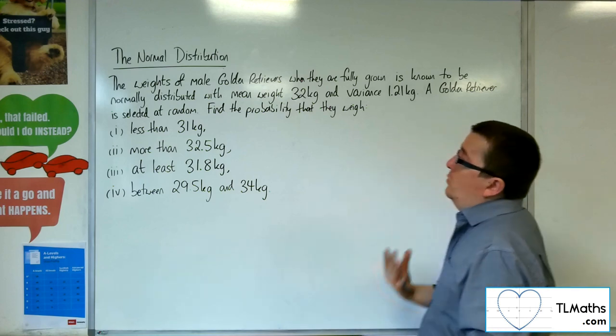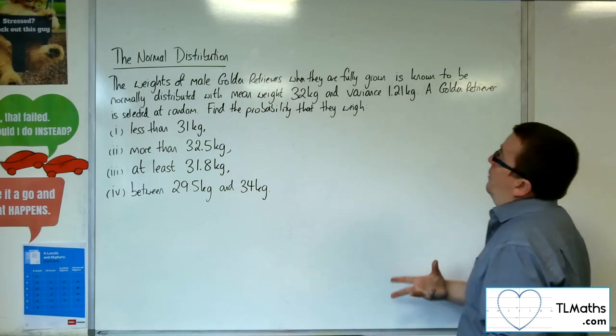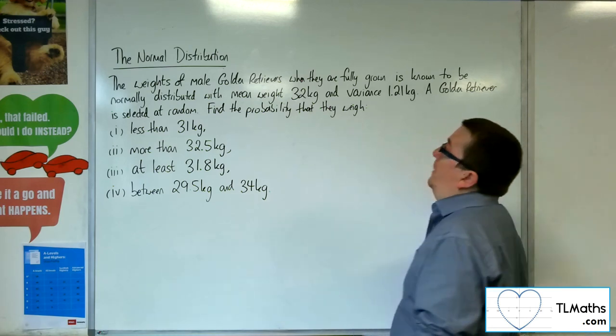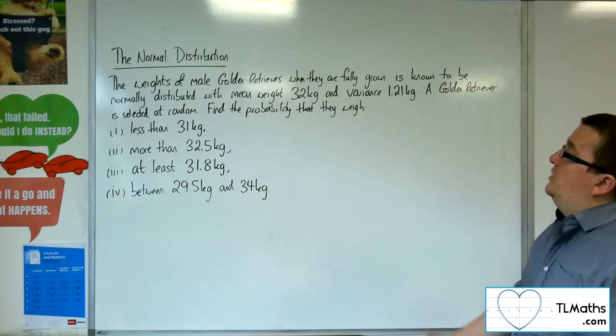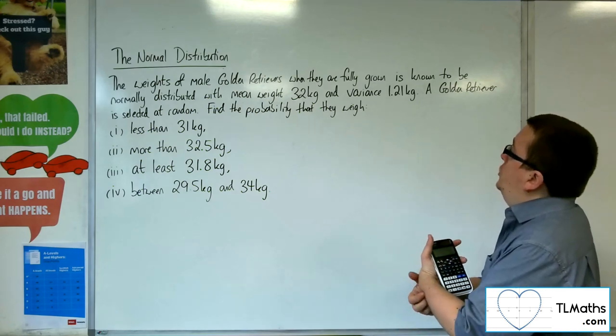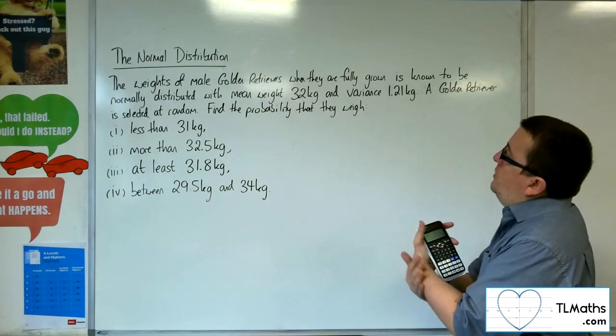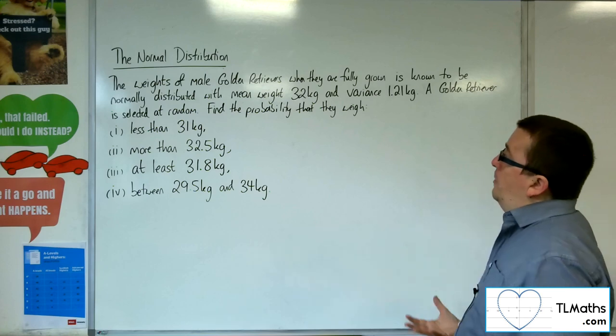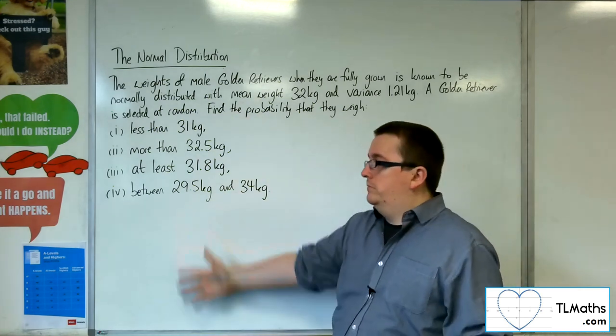The weights of male golden retrievers when they are fully grown is known to be normally distributed with a mean weight of 32 kilos and variance of 1.21 kilos. A golden retriever is selected at random. Find the probability that they weigh these questions.